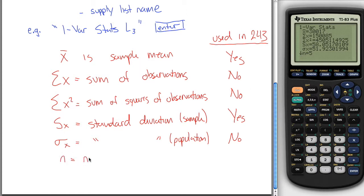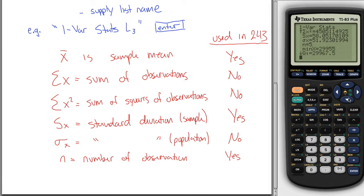N is number of observations. Sure, I guess you could use that in 243, although it's probably easier to count your observations than to ever do it this way. And then the next ones you got, if you scroll down, are min, q1, median, q3, and max.